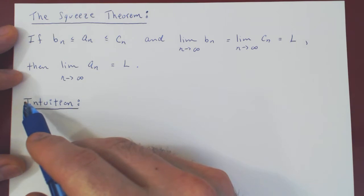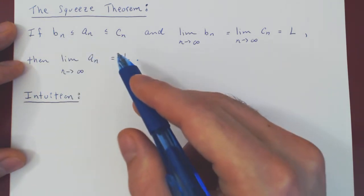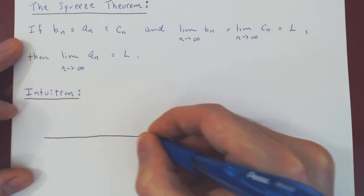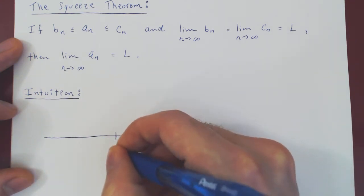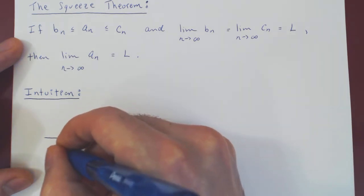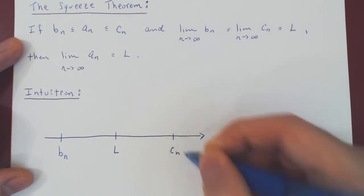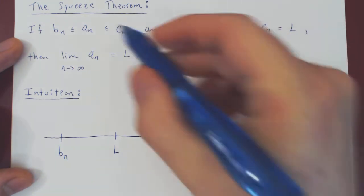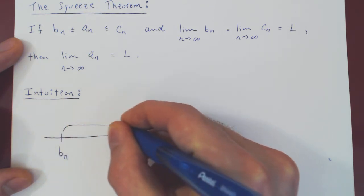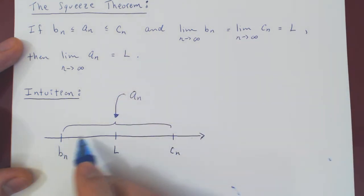Let's see why this is a very intuitive result. Let's visualize our three sequences and l along the real line, assuming for now that l is a real number. Suppose l is here, and let's assume for argument's sake that bn is smaller than l — this will simplify the argument — and that cn is larger than l. By assumption, for any n, an lies somewhere between bn and cn.